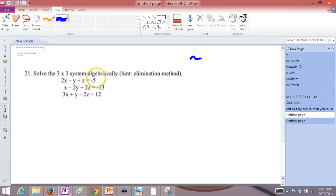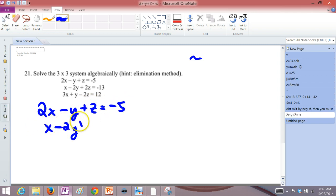Solve this 3 by 3 system algebraically. So what we have here is 2x minus y plus z is negative 5, x minus 2y plus 2z is negative 13, 3x plus y minus 2z is 12. And what we have to do is elimination method.